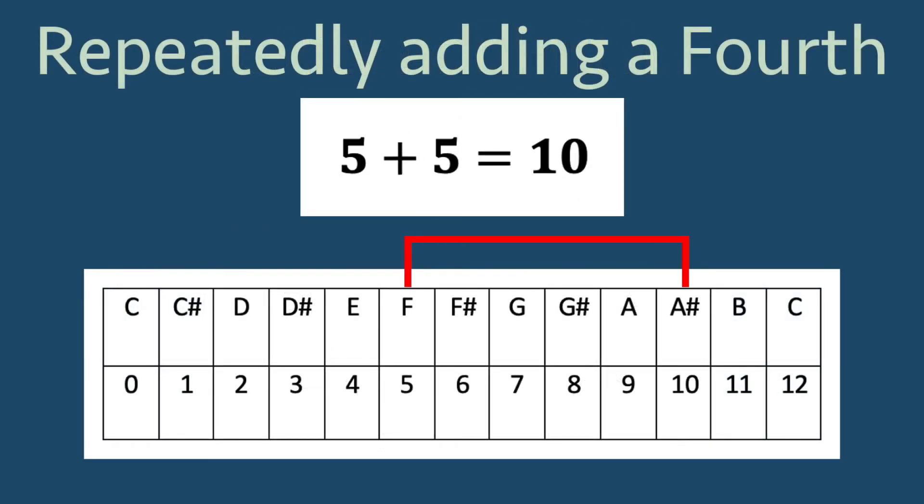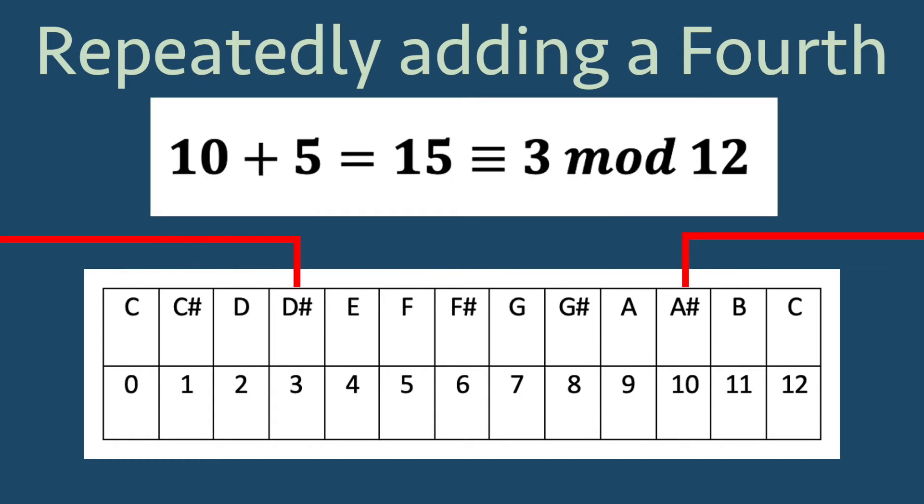We can also use the interval of a perfect fourth, repeatedly adding 5, to generate the 12-tone scale.